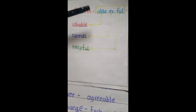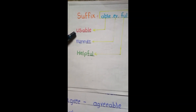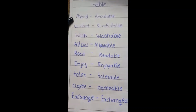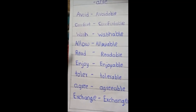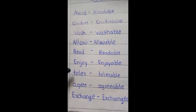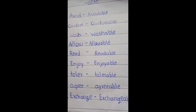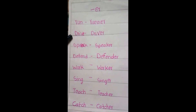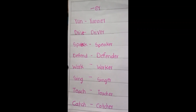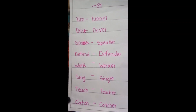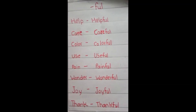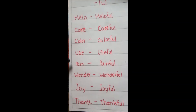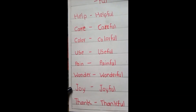Here are some suffixes: -able, -er, and -full. Number 1: usable. Number 2: runner. Number 3: helpful. First chart is '-able' type suffix words: avoid — avoidable, comfort — comfortable, wash — washable, allow — allowable, read — readable, enjoy — enjoyable, tolerate — tolerable, agree — agreeable, exchange — exchangeable. Second chart is '-er' type suffix words: run — runner, drive — driver, speak — speaker, defend — defender, work — worker, sing — singer, teach — teacher, catch — catcher. Third chart is '-full' type suffix words: help — helpful, care — careful, color — colorful, use — useful, pain — painful, wonder — wonderful, joy — joyful. Thank you.